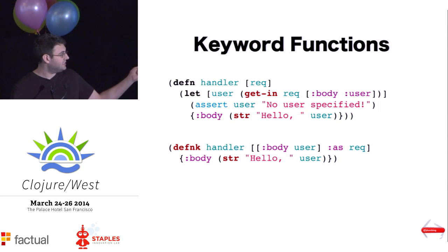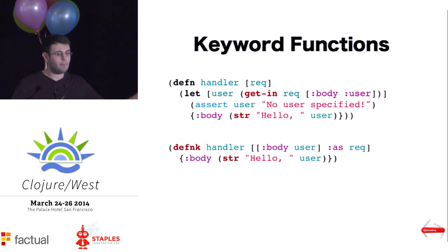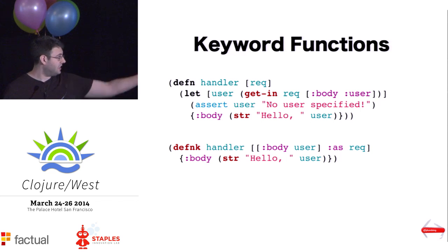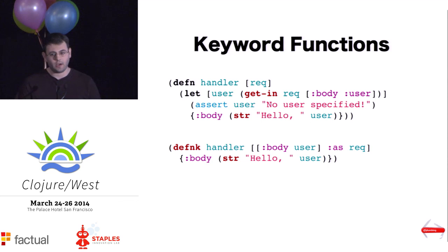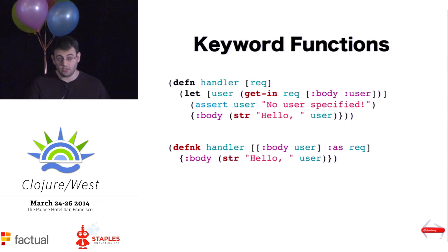What it does is, in the argument list, it safely destructures the input map, looks inside the body and then within the body under the user key, and saves the value there under the user variable. Then it can use the variable inside the body of the function just as before. So that's what keyword functions allow us to do — safely destructure the inputs.